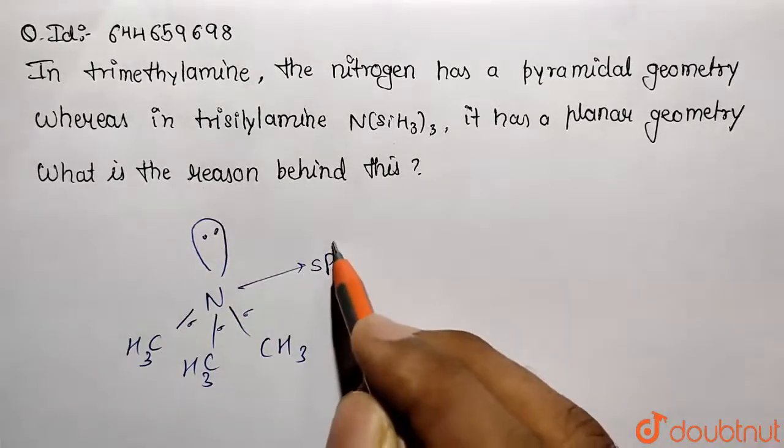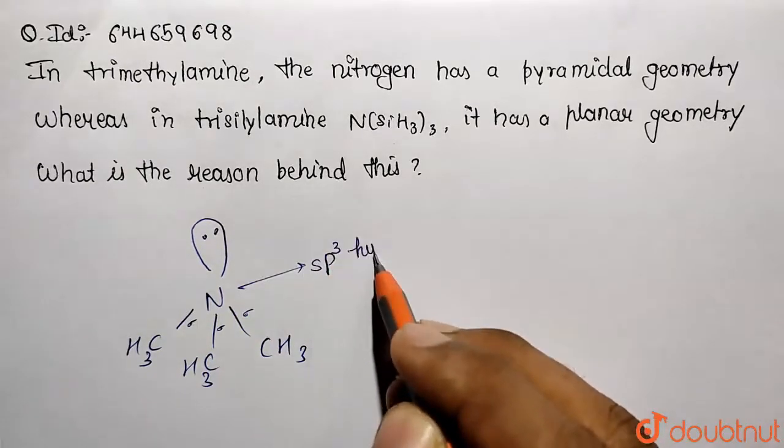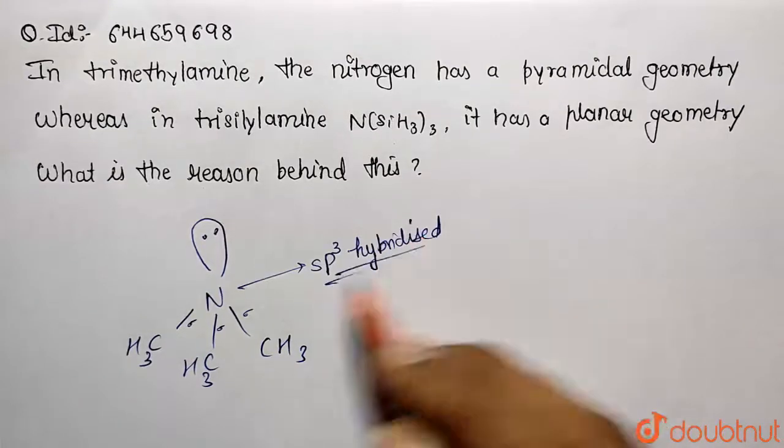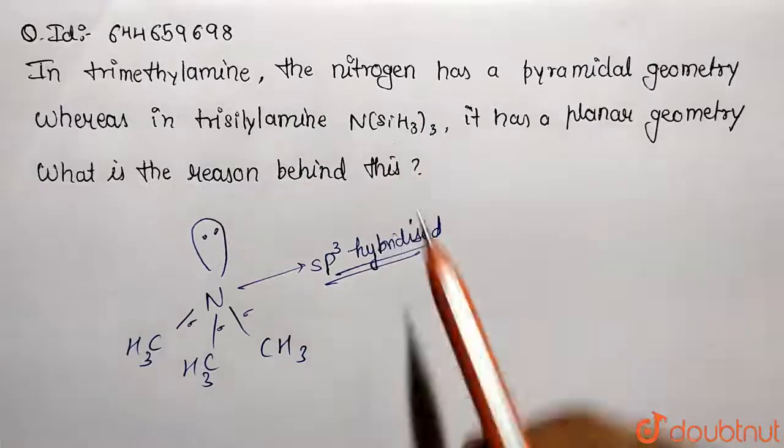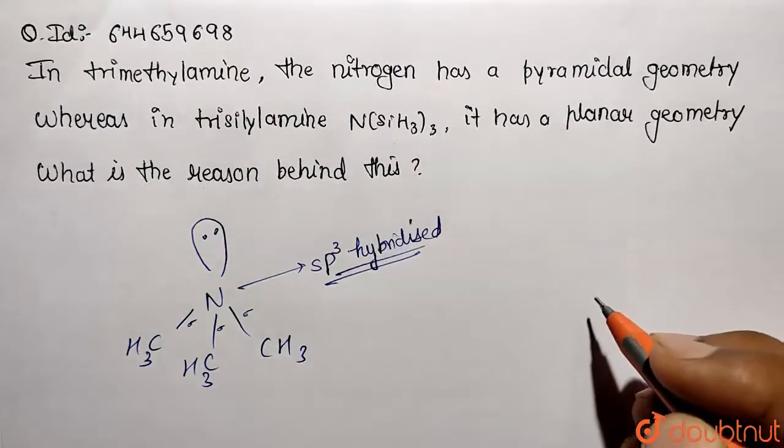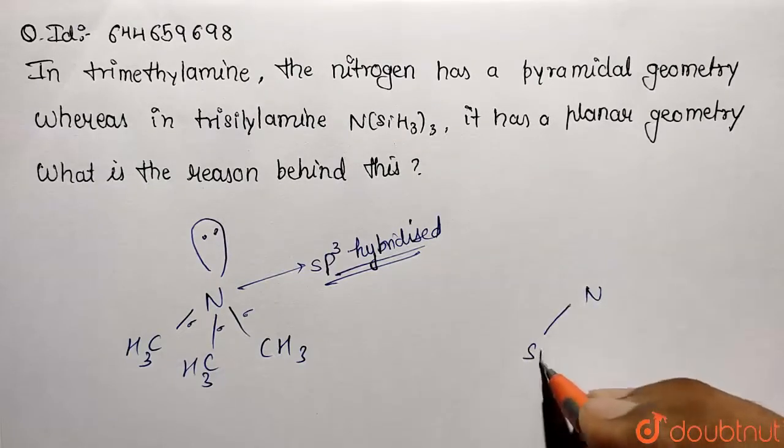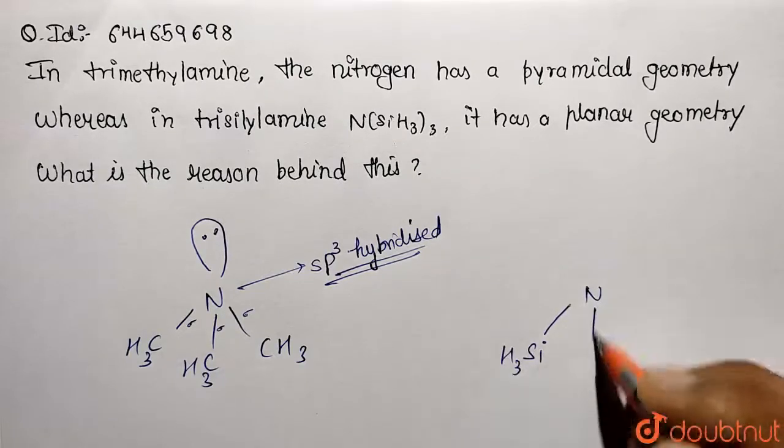So it's going to be sp3 type of hybridized carbon—nitrogen sp3 hybridized. Similarly, if you write the structure for this molecule, so this is going to be nitrogen as the central atom, then SiH3 here, also SiH3.